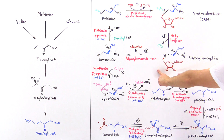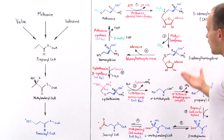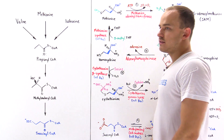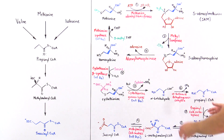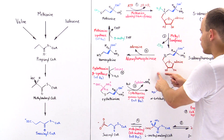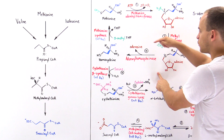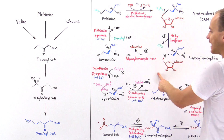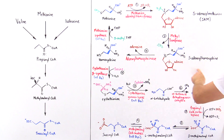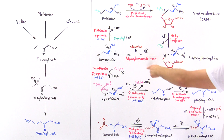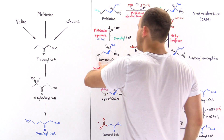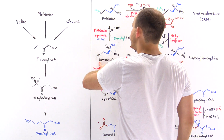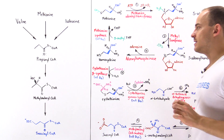Once we form S-adenosyl homocysteine, in the next step we basically want to remove that adenosine group. This entire group is removed, and the enzyme that catalyzes this is adenosyl homocysteine hydrolase. The product molecule that we form is homocysteine, and we still have that blue section that ultimately will become part of the succinyl coenzyme A.